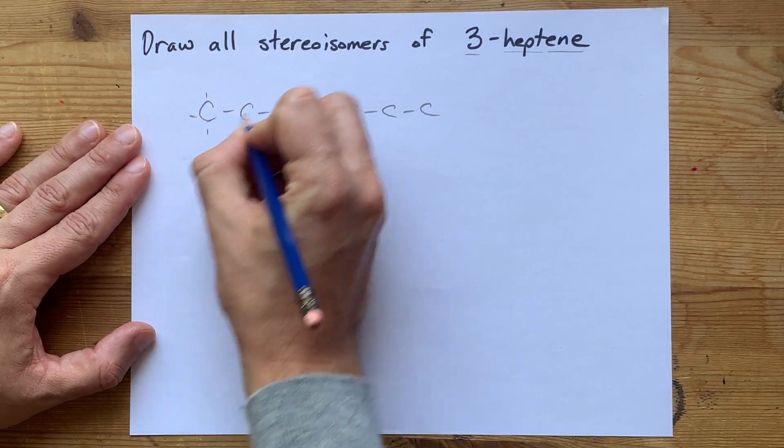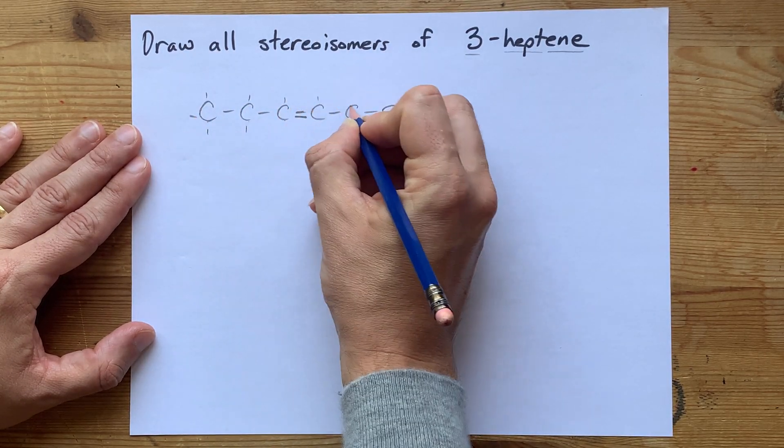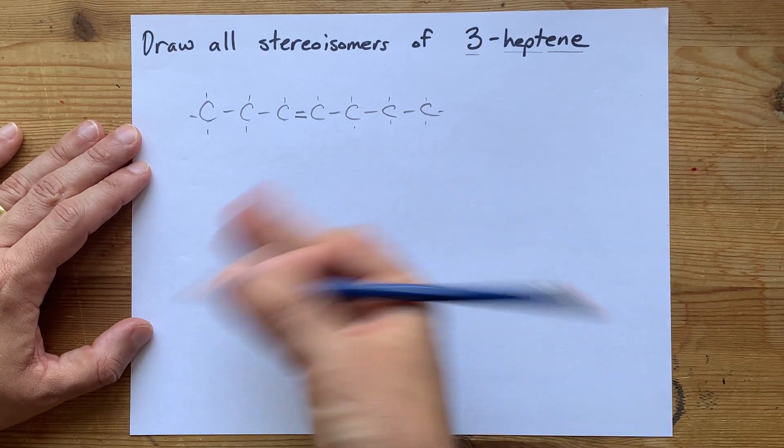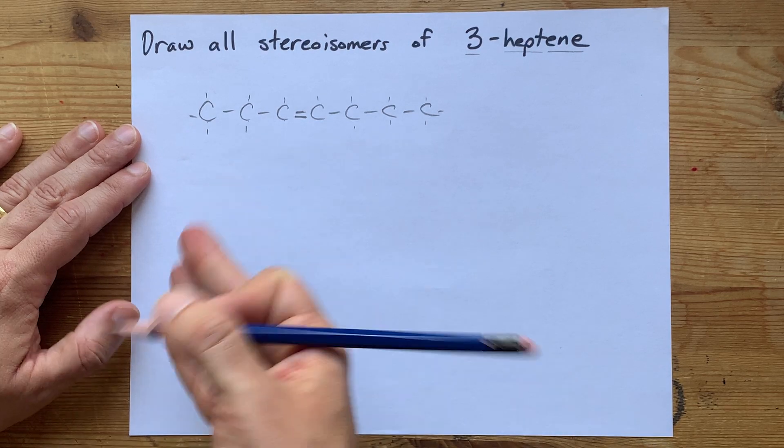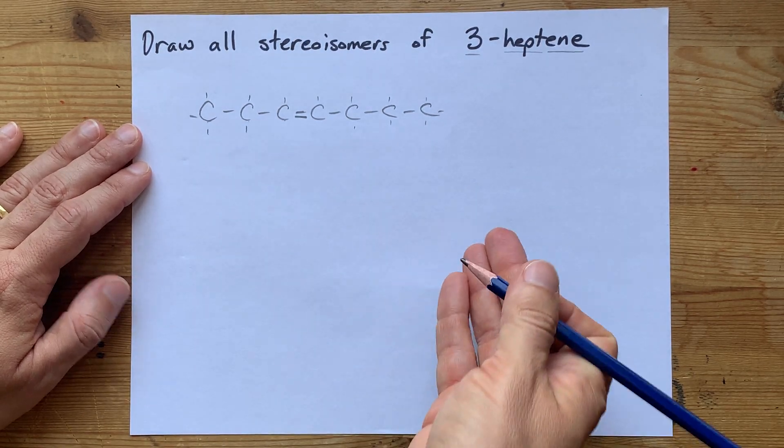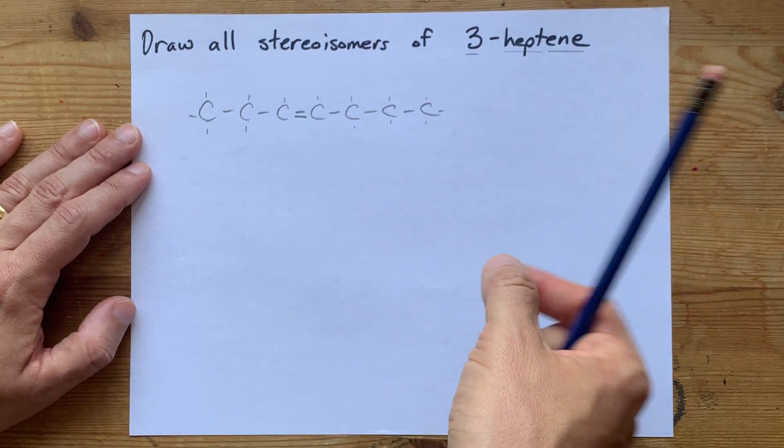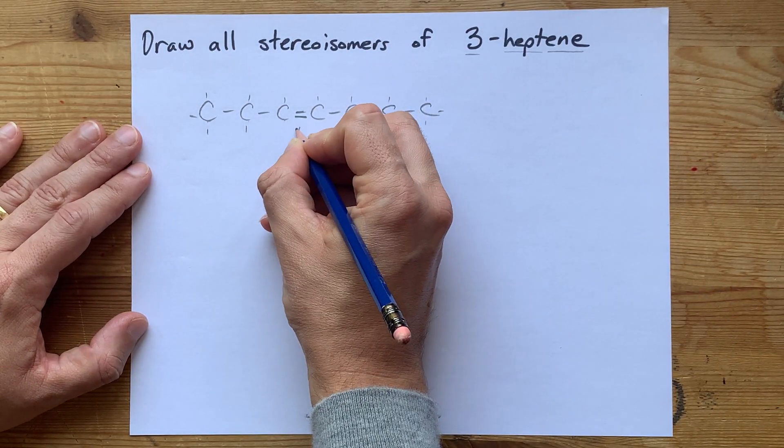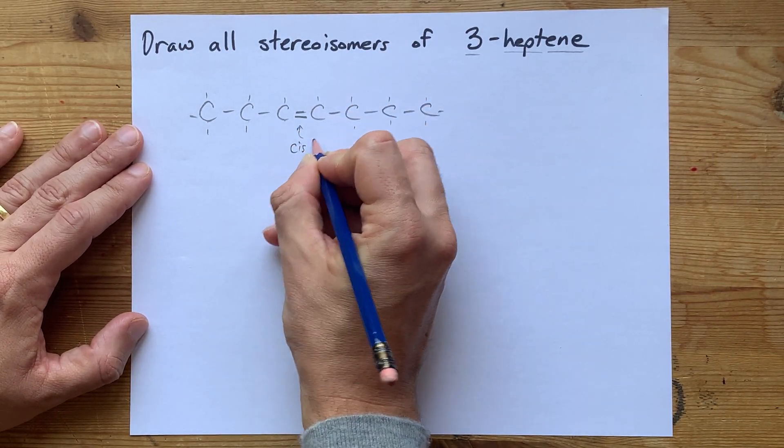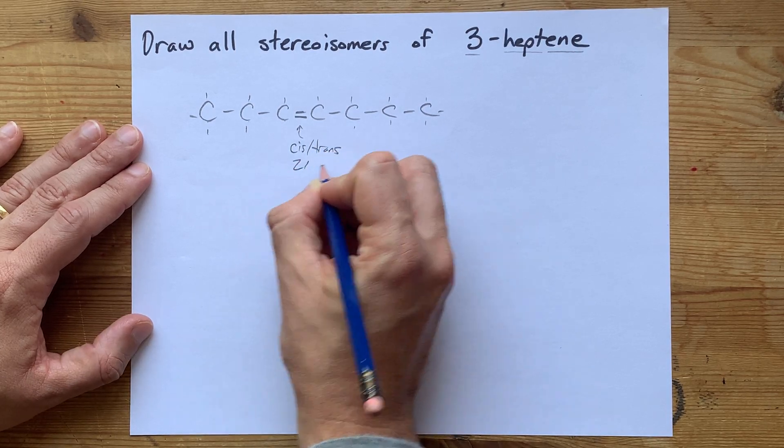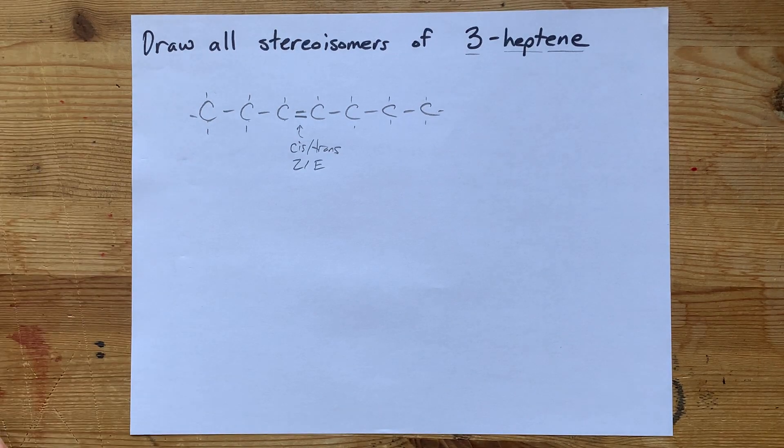Now, I'm going to fill this out with hydrogens, because there's nothing else attached to it, and I can see that there are no chiral centers here. There's no carbons that are connected to four distinct things, but there is a double bond that will have both cis and trans, or if you prefer, Z and E isomers.